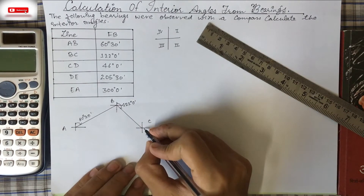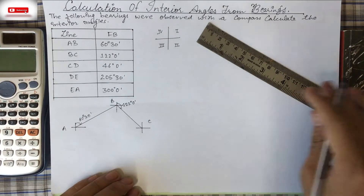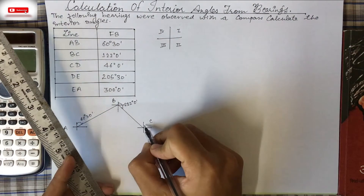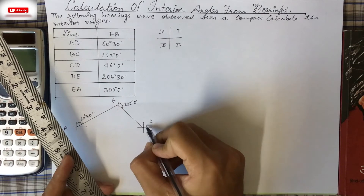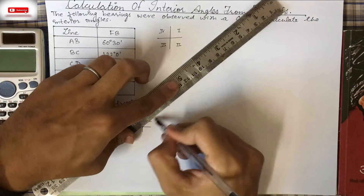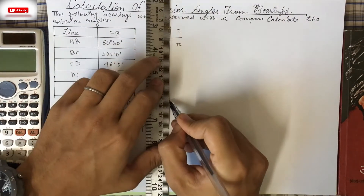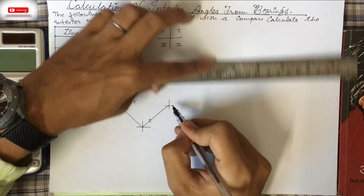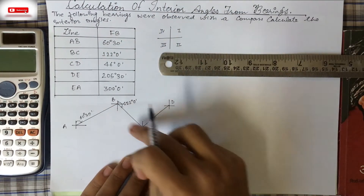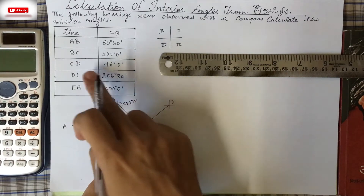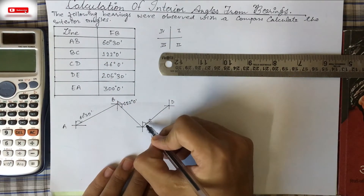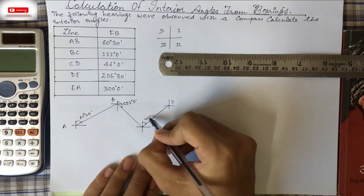From C to D the bearing is 46°0', which is in the first quadrant near 45°. We draw this line from point C accordingly, giving us point D.